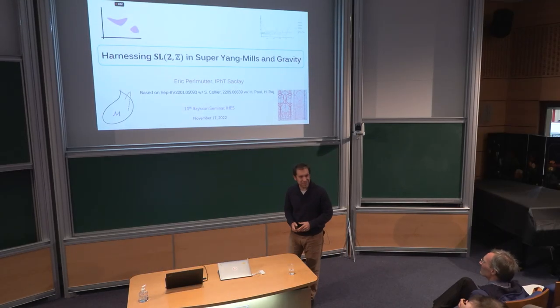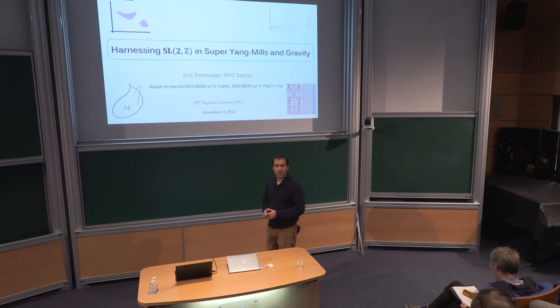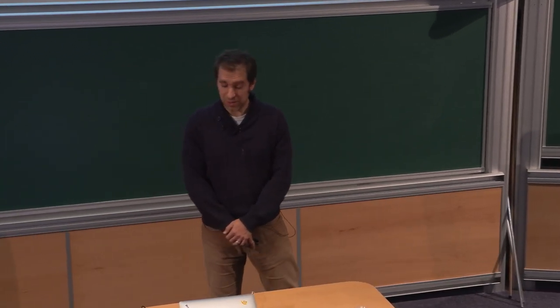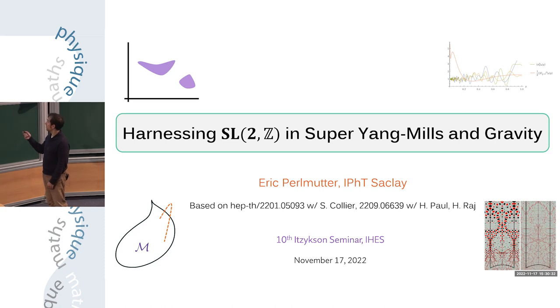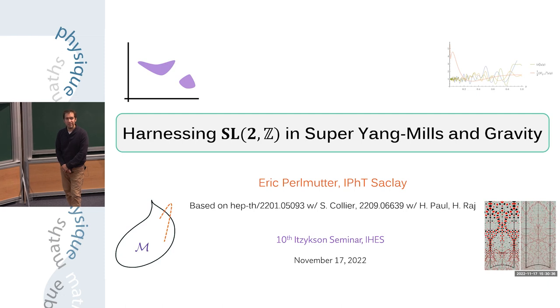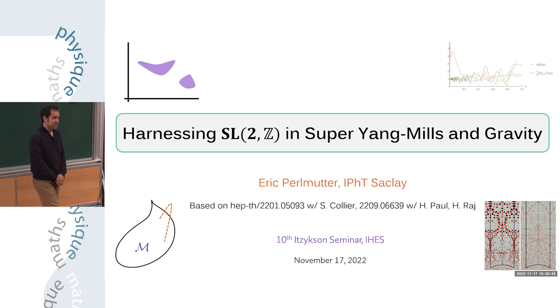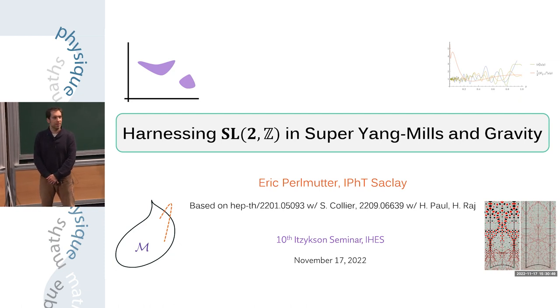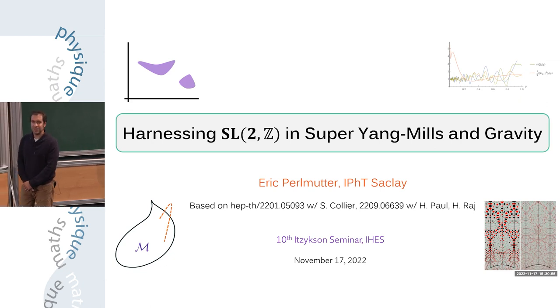Thanks Sylvain for the introduction and the invitation to speak at this nice day of interesting thematic talks. This work will be about some work that I did since arriving at IPHT, some of it with Scott Collier who is a postdoc at Princeton, and some of it with Hinek Paul and Himan Chiraj who are both in the audience here — they're postdocs at IPHT. It will be squarely in the theme of the day: it's certainly a physics talk, but the main idea is to import a tool from the math community and use it to new effect in the context of N=4 super Yang-Mills, which is a four-dimensional gauge theory.